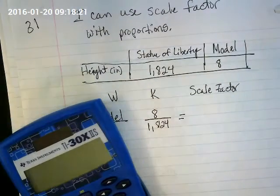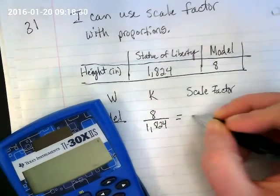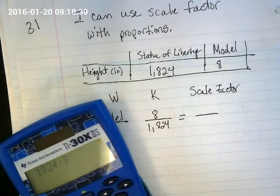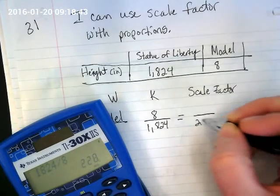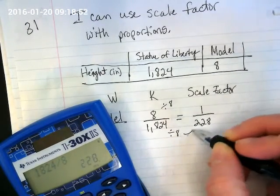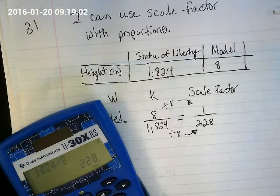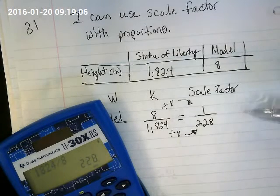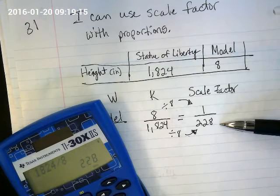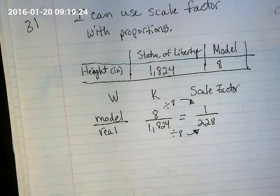When you guys are back in your seats working, you're going to be able to use a calculator. The best thing to do, we've got the 8 here. We really want that 8 to go down to 1. So we're going to divide it into this. So we're going to do 1,824 divided by 8 gives us 228. So you want to divide both by the model's number. And that will give you your scale factor. And what does this mean? It means that the real Statue of Liberty is 228 times as big as that little 8 inch model of it.